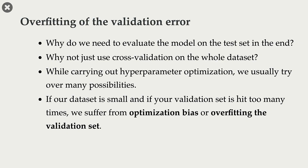The point is that while carrying out hyperparameter optimization, we usually try over many, many possibilities. And even though validation splits in each fold are not going to influence the training directly, they are going to influence this hyperparameter optimization process. If our dataset is small, our validation sets are going to be small, and they are going to be hit too many times when we carry out hyperparameter optimization. When that happens, we might suffer from optimization bias or overfitting of the validation set.